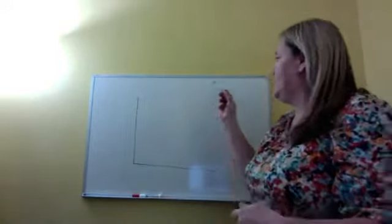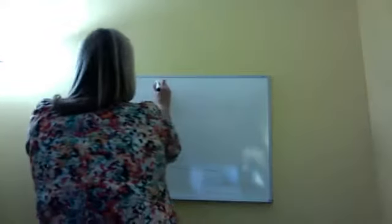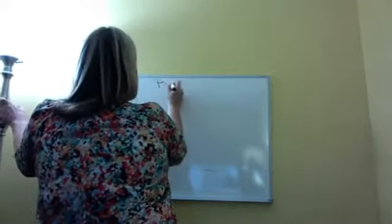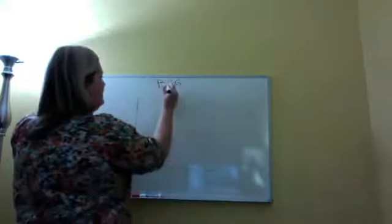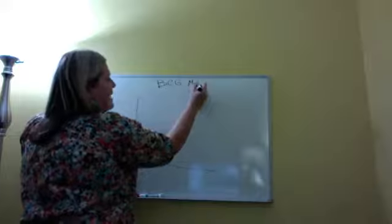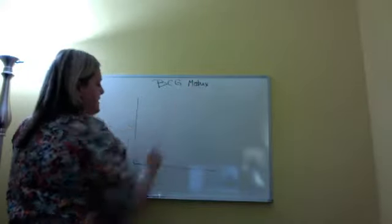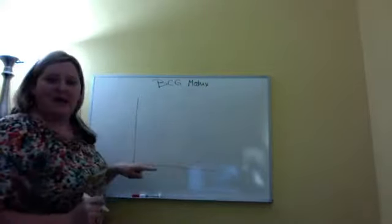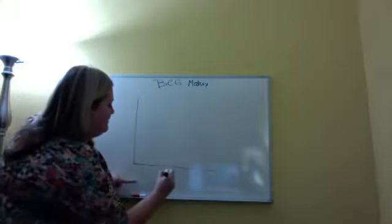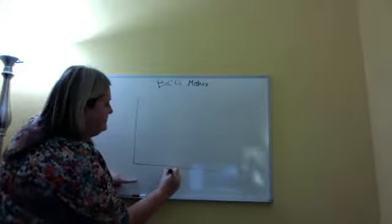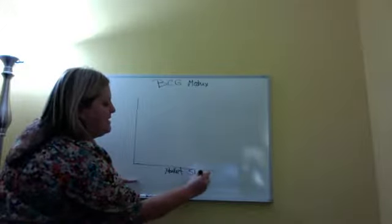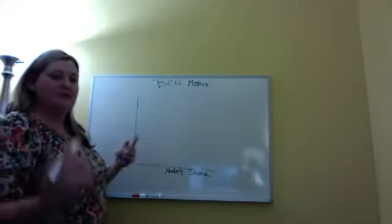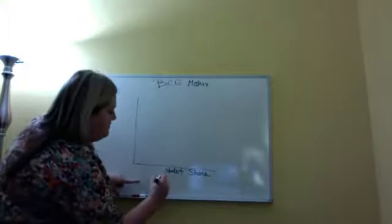So I'm going to put a title up here just so you'll know it's called the BCG matrix. What you want to do is you have an x-axis here, and on your x-axis this is your market share. So I'm going to write this here, hopefully pretty big so you can see it. Basically, what market share is, it's your size of your business in comparison to others.